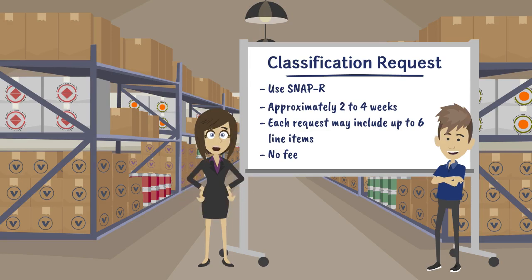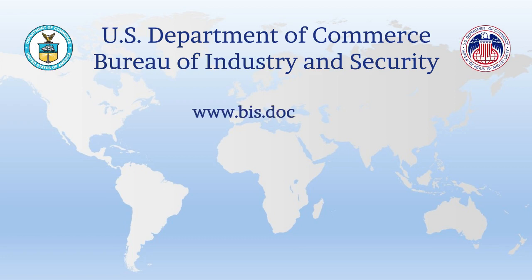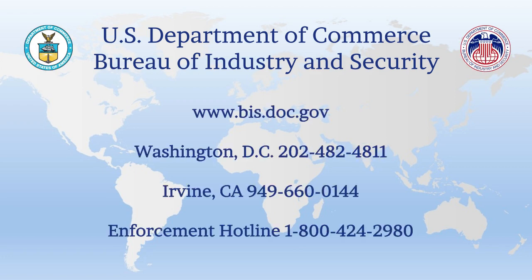Once you know your ECCN, you are ready to determine if you have an export license requirement to export your products. I recommend watching Export Control's Quick Start Guide for those steps. As always, the Bureau of Industry and Security's Office of Exporter Services is here to help. Please feel free to contact us if you have any further questions. Thank you and happy exporting!